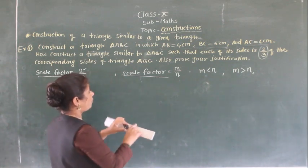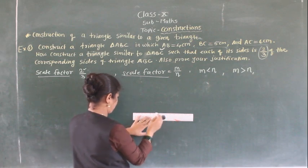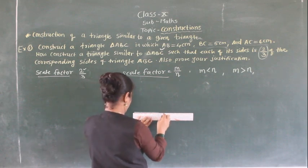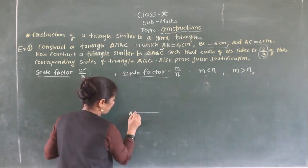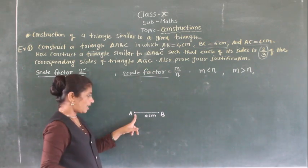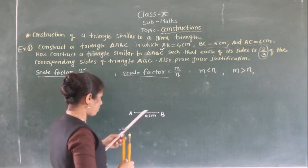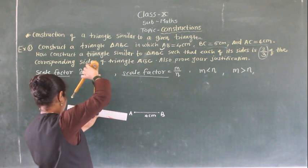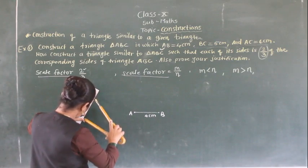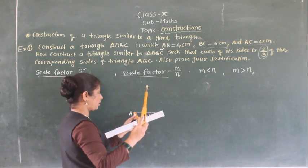First draw triangle ABC with the given measurements: AB equals 4 cm, so first draw a 4 cm segment. Then take center A with radius AC equals 6 cm and draw an arc of 6 cm from point A.